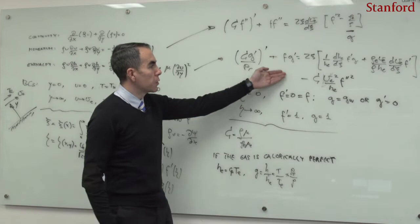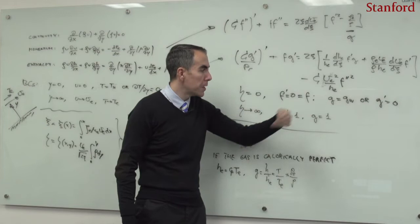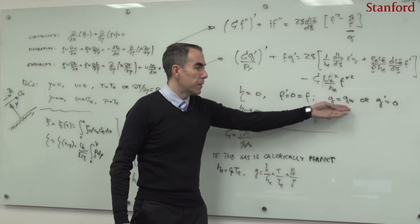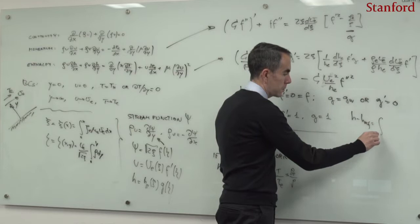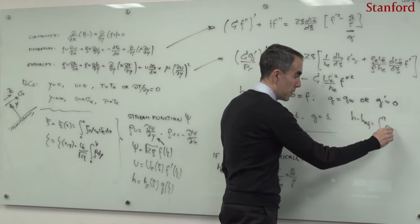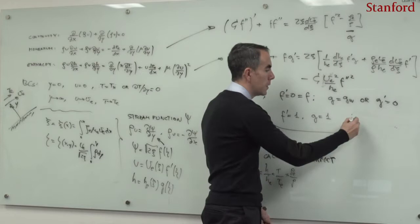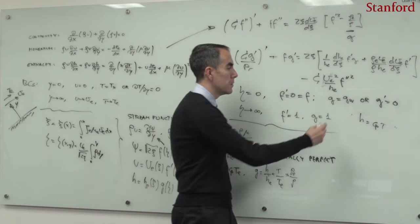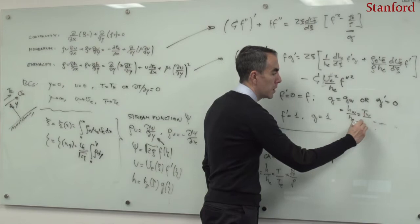If the gas is calorically perfect, one can define a dimensionless stagnation temperature as T0 equal to T0_e multiplied by a function M of eta. This T0_e is uniform because the flow outside the boundary layer is isentropic. For the boundary condition, G_w becomes not only the wall enthalpy normalized by the edge enthalpy, but also the wall temperature divided by the edge temperature. The problem becomes much easier.